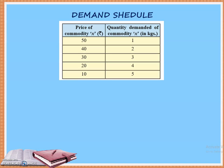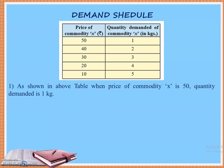This is a very simple demand schedule and you will be easily able to understand what we are trying to learn. On the first column you can see the price of the commodity and on the second column you will see the quantity demanded. Here the commodity is X, the price is mentioned in rupees and the quantity demanded is in kilograms. As shown in the above table, when the price of commodity X is 50 rupees, the quantity demanded is 1 kg.